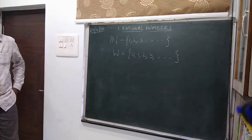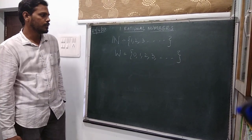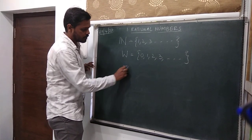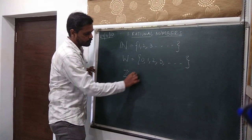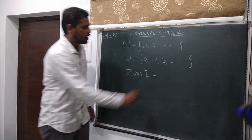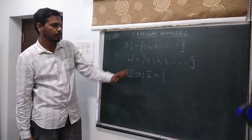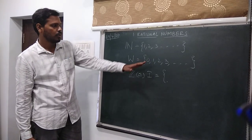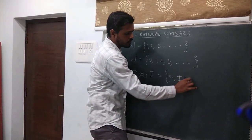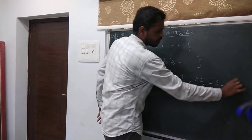After whole numbers, we have the next collection called integers, which we denote with Z or I. These are the combination of the collection of negative numbers and whole numbers, which we write like 0, ±1, ±2, ±3 and so on.